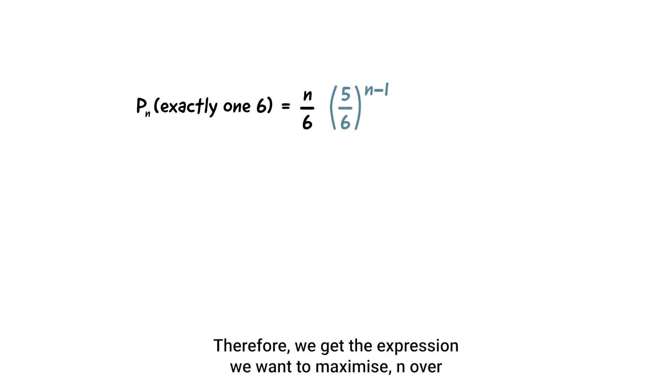Therefore, we get the expression we want to maximize: n over six multiplied by five sixths to the power of n minus one.